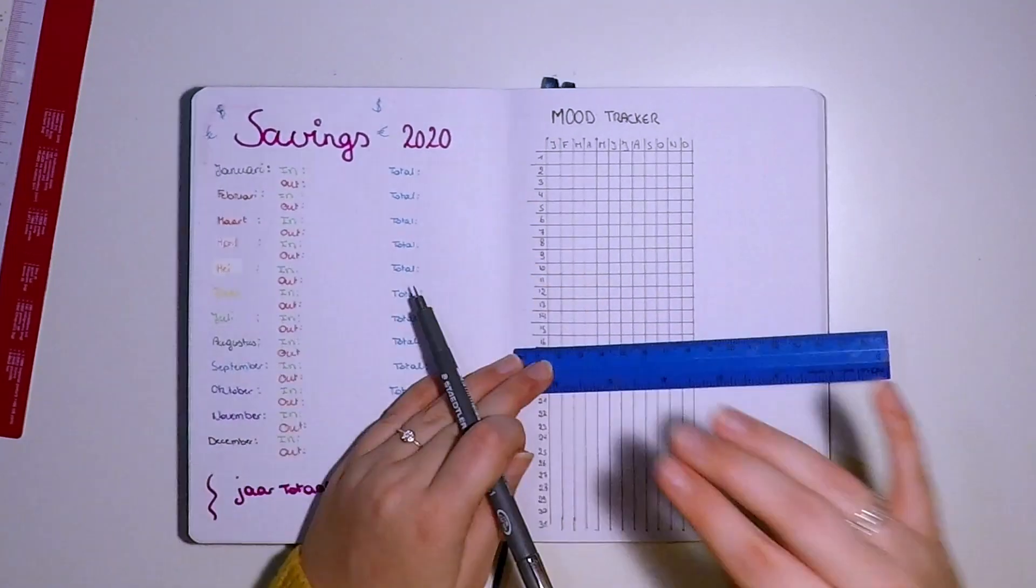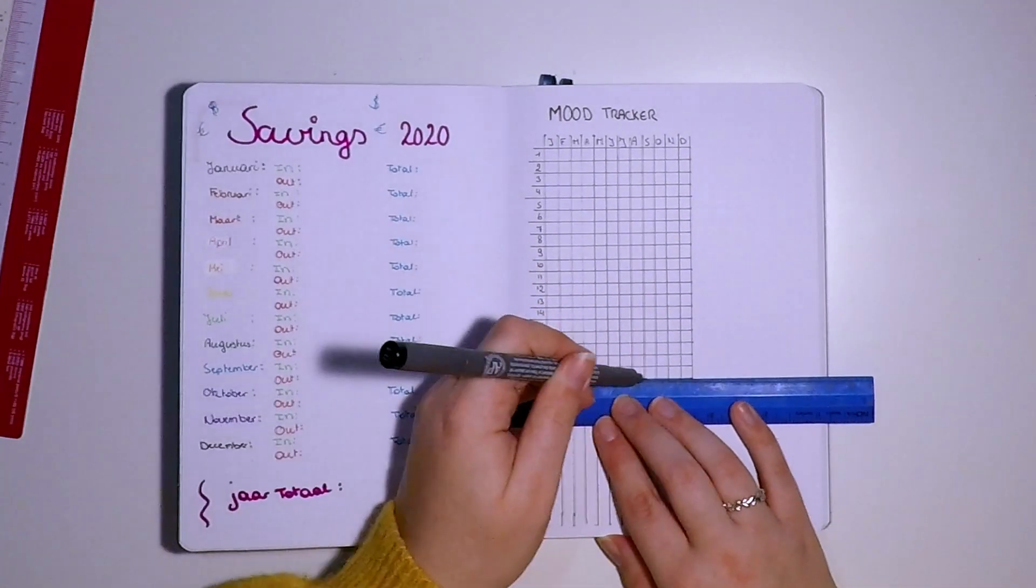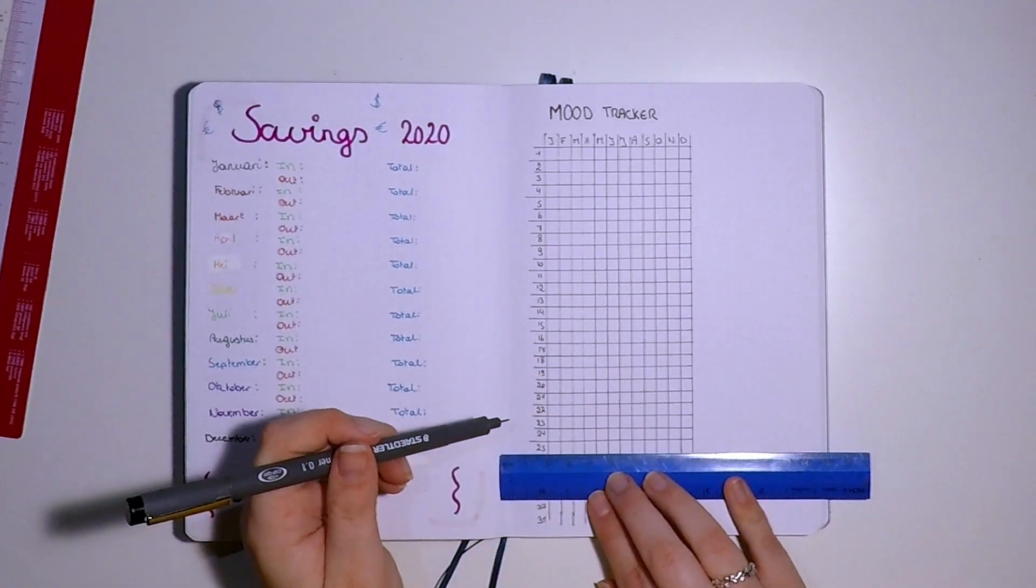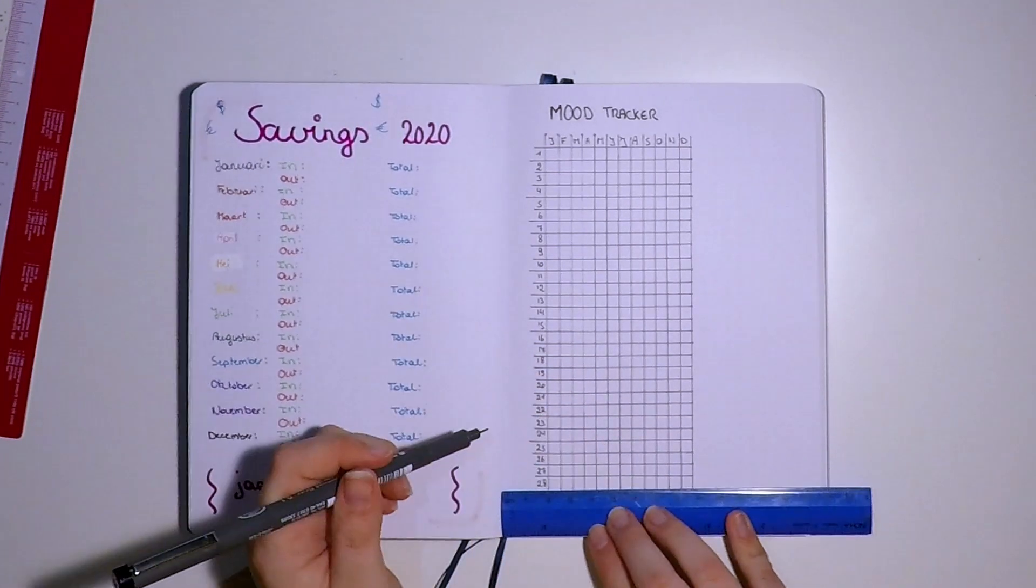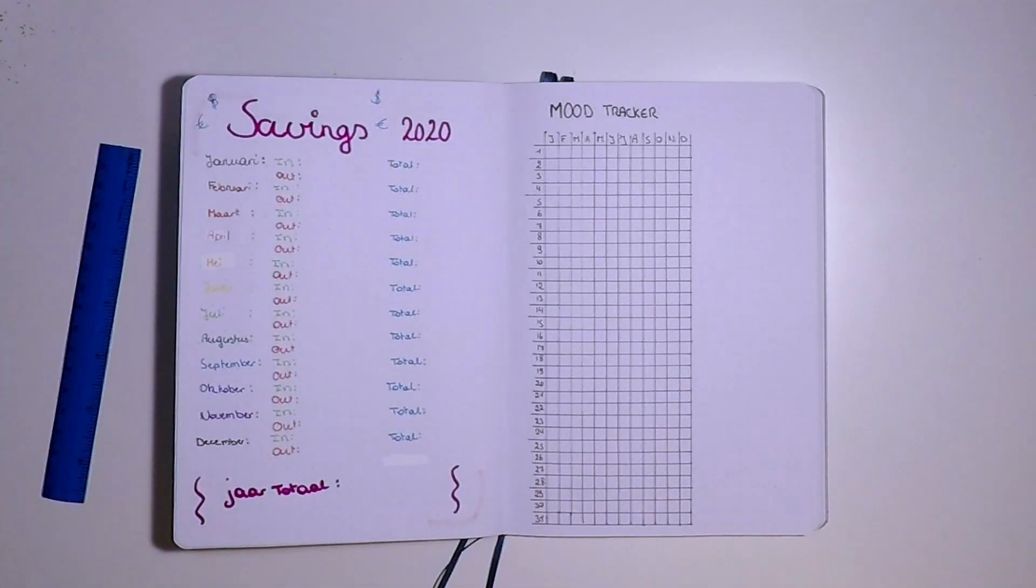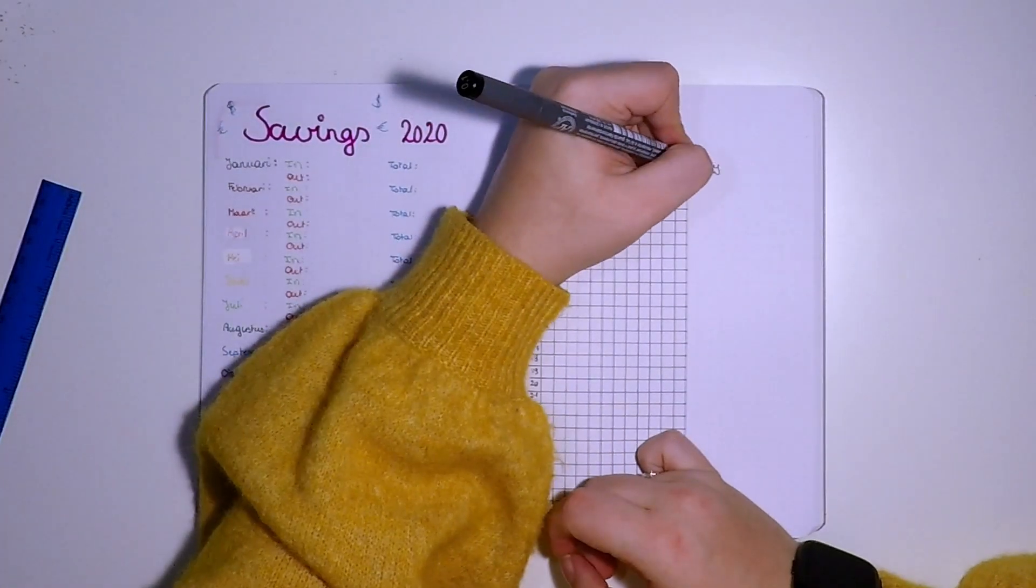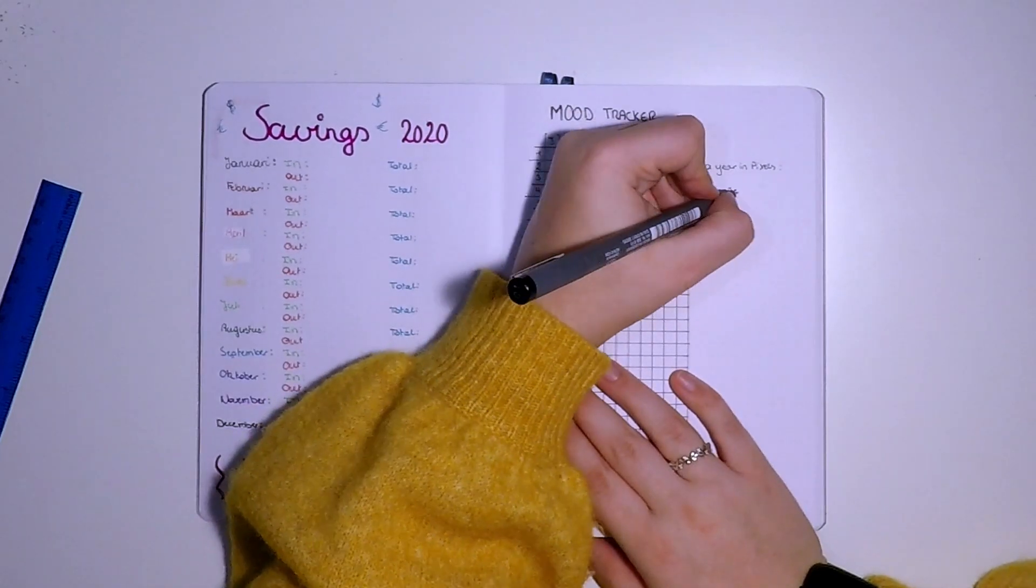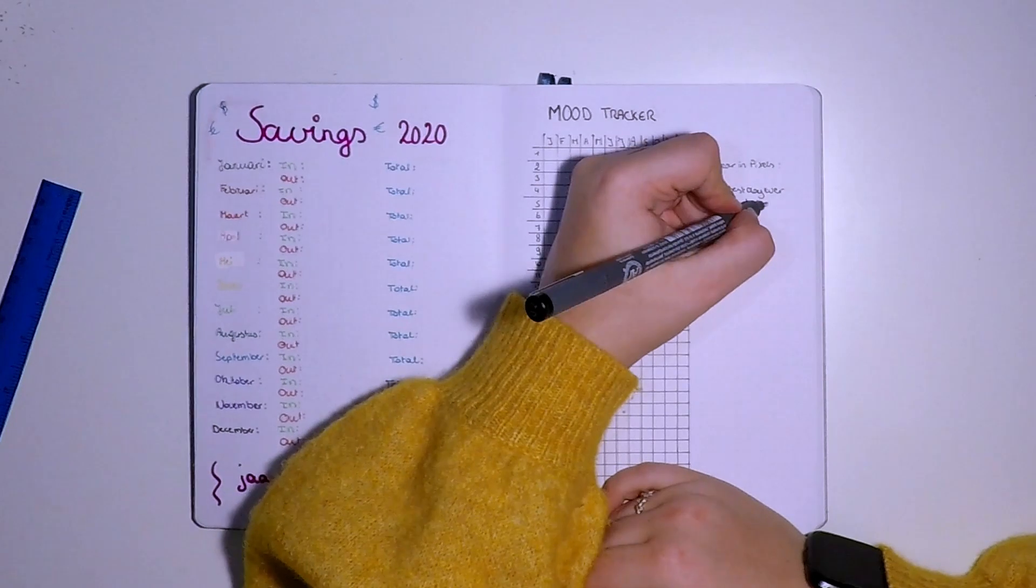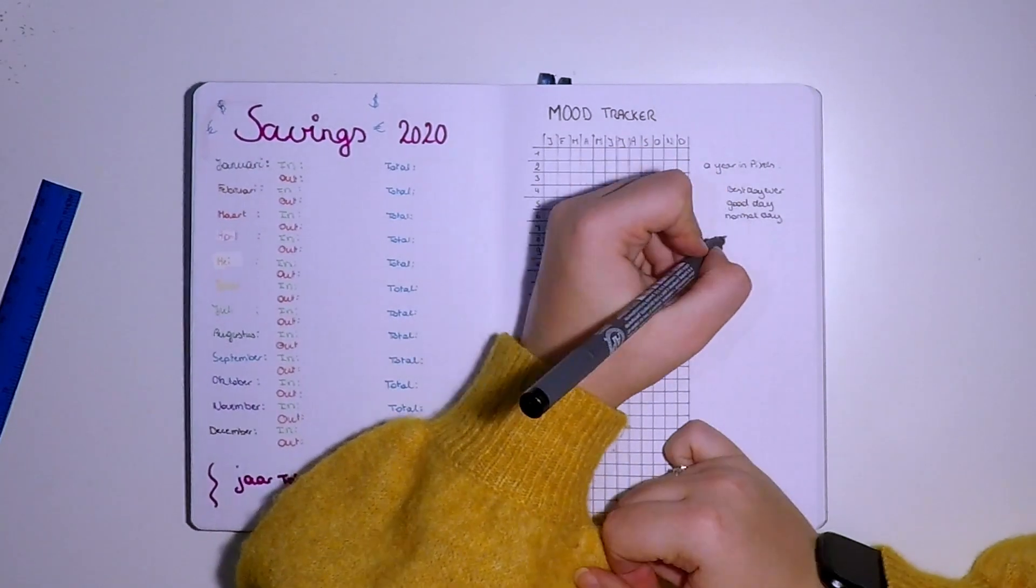I also found that most people just use like good day, normal day, okay day, sad day, bad day. And I'm like, there are so much more emotions than that. And I found this one photo online which had good day, normal day, best day ever, but then also sad, I'm sick day, and for me depressed day. So there are way more emotions than just five.